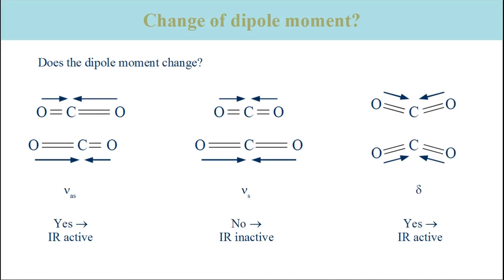In the anti-symmetric stretching vibration, the dipole moments of the two CO bonds show in different directions. When one of them is small, the other one is large and vice versa. Therefore, there is a resulting total dipole moment, and the direction of it is different at the two extreme positions — it points to the left in the top structure and to the right in the bottom structure. When going from the top structure through the equilibrium structure to the bottom structure, the direction of the dipole moment changes from pointing to the left to pointing to the right. Therefore, there is a change in the total dipole moment with the vibration, and this vibration is infrared active and absorbs at 2349 reciprocal centimeters. Note that this change of dipole moment occurs although the molecule has no permanent dipole moment.